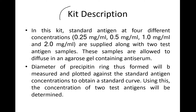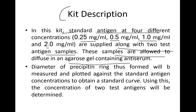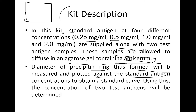In this kit, a standard antigen at four different concentrations — 0.25, 0.5, 1, and 2 mg/mL — is supplied along with two test antigen samples of unknown concentration. These samples are allowed to diffuse in an agarose gel containing antiserum. The diameter of the precipitating ring formed is measured and plotted against the standard antigen concentration to obtain a standard curve.